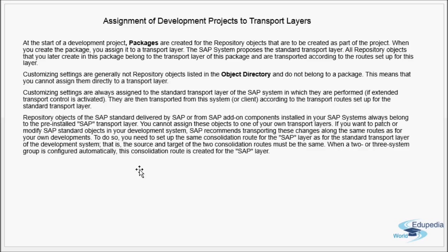The delivery route can be between any two systems other than the source development system. Sometimes when you have a second development box, a transport is initially created there and moved to another development box, and from that second development box to quality you can also have delivery routes. The source where the object is initially created is called the consolidation node.